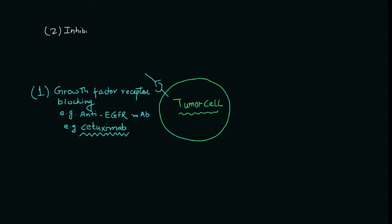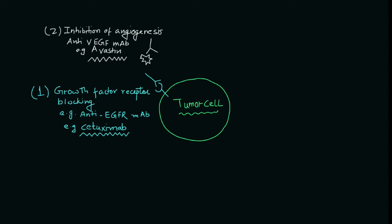The second mechanism is the inhibition of angiogenesis. The antibody is an anti-VEGF monoclonal antibody; the example is Avastin (bevacizumab). What it does is bind to that specific protein — that specific growth factor, not the receptor — so the antibody targets the growth factor directly.